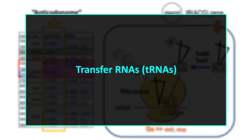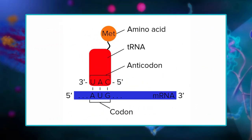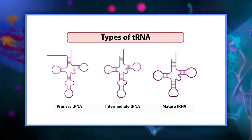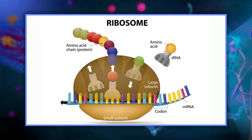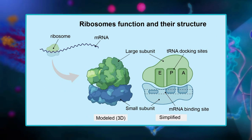tRNAs are molecular bridges that connect mRNA codons to the amino acids they encode. One end of each tRNA has a sequence of three nucleotides that can bind to specific mRNA codons; the other end carries the amino acid specified by those codons. There are many different types of tRNAs — each type reads one or a few codons and brings the right amino acids matching those codons.